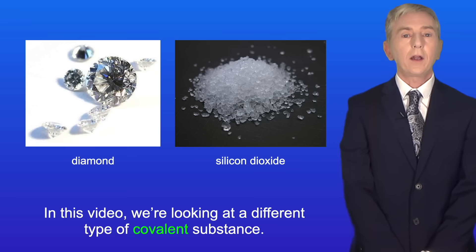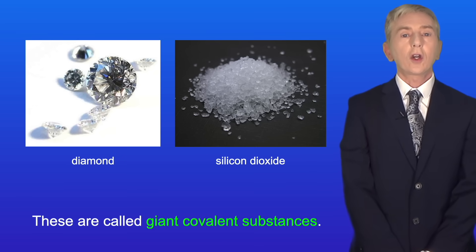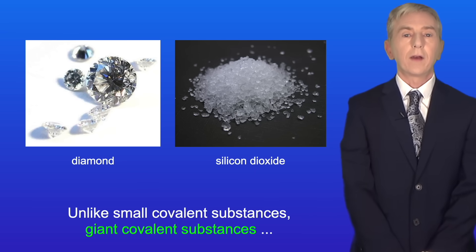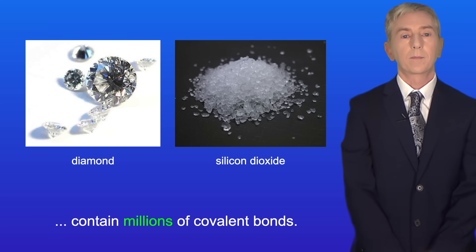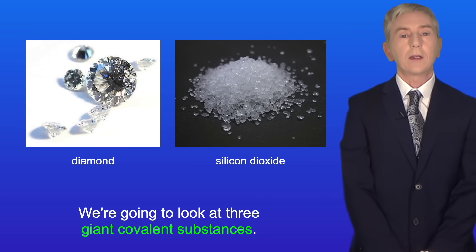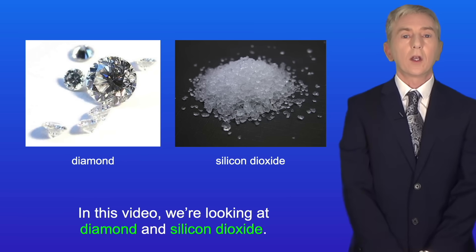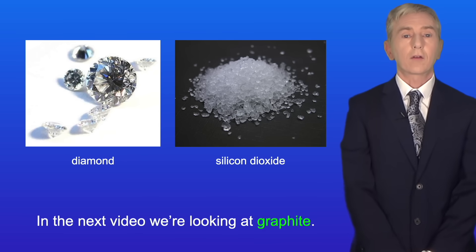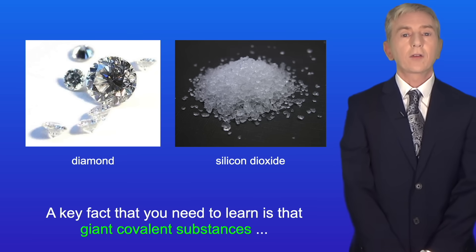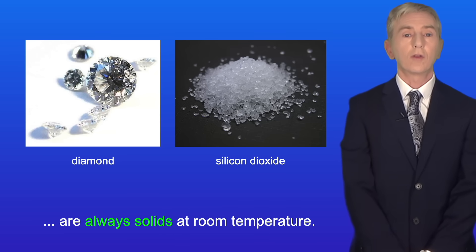Now in this video we're looking at a different type of covalent substance — these are called giant covalent substances. Unlike small covalent molecules, giant covalent substances contain millions of covalent bonds. We're going to look at three giant covalent substances: diamond, silicon dioxide (or silica), and graphite. In this video we're looking at diamond and silicon dioxide, and in the next video we're looking at graphite. A key fact you need to learn is that giant covalent substances are always solids at room temperature.